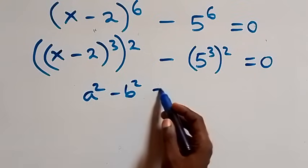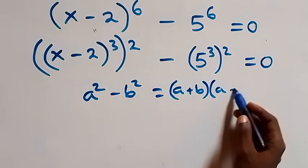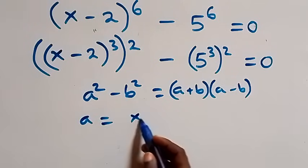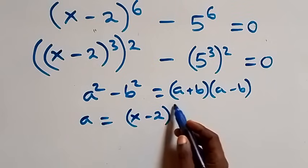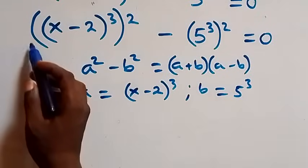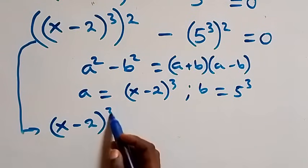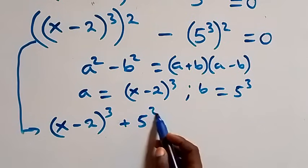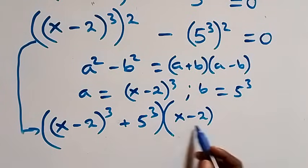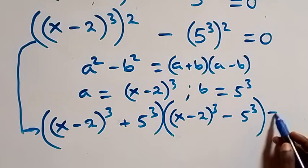Recall that a squared minus b squared equals a plus b, times a minus b. Here a stands as x minus 2 raised to power 3, and b stands as 5 raised to power 3. So we write: x minus 2 raised to power 3, plus 5 raised to power 3, times x minus 2 raised to power 3, minus 5 raised to power 3, equals to 0.